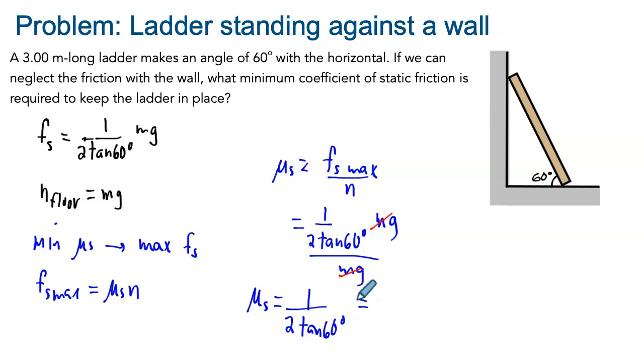You can do the math, and you will get a minimum value for the coefficient of friction of 0.29. So this is the answer we are looking for. But actually this equation here is much more interesting because it tells us what's going on as the angle changes.